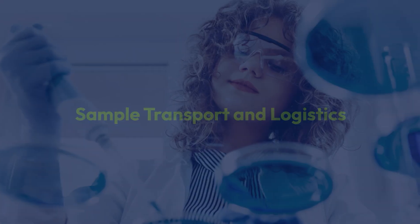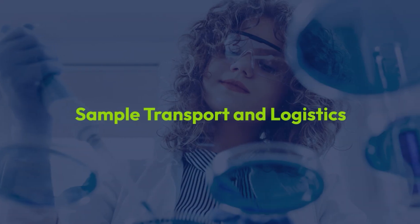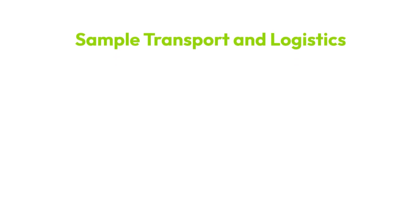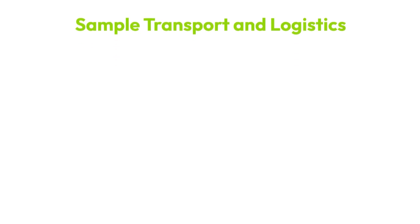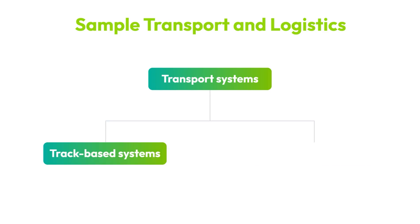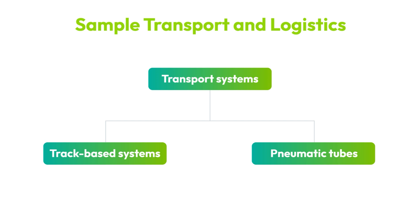Sample transport and logistics automation deals with efficiently moving samples within the lab. Automated transport systems such as track-based and pneumatic tube systems ensure that samples are quickly delivered to the right location, reducing the time it takes to complete testing and improving workflow efficiency.